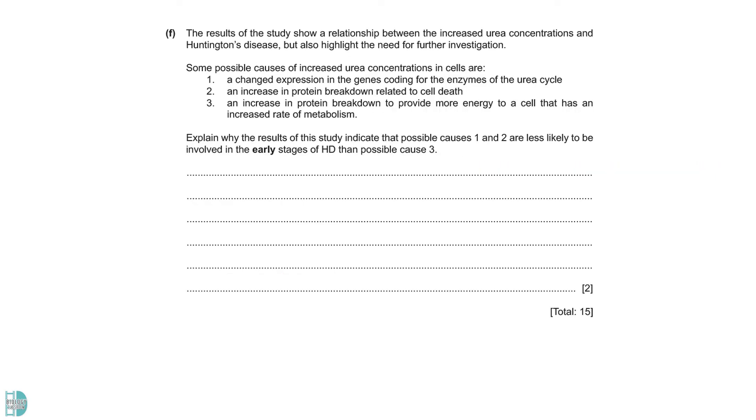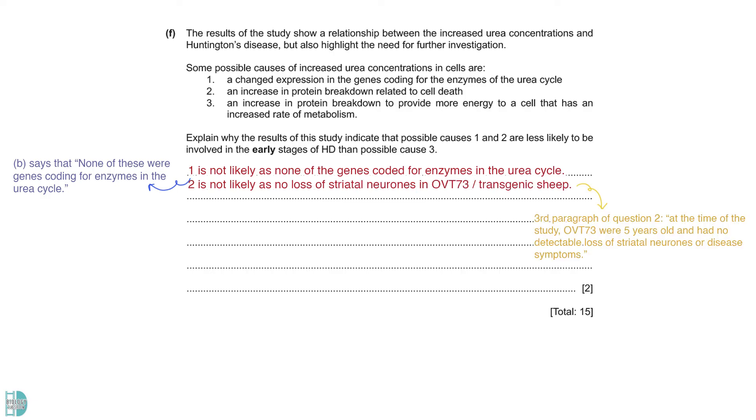In part F, we have three possible causes of increased urea concentration in cells. You have to explain why the results of this study indicate that possible causes 1 and 2 are less likely to be involved in the early stages of Huntington disease than possible cause 3. Cause 1 is unlikely as in part 2B, we were told that none of the genes coded for enzymes in the urea cycle. Cause 2 is also unlikely as in the third paragraph of question 2, it says that at the time of the study, OVT73 were 5 years old and had no detectable loss of striatal neurons or disease symptoms. Cause 3 is the most possible cause because in E3, we learn that when there is more urea being produced, a greater gene expression occurs to synthesize the transport proteins so cells require more energy for this process.